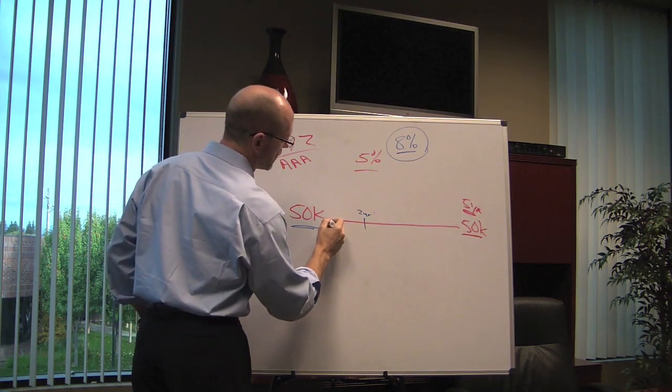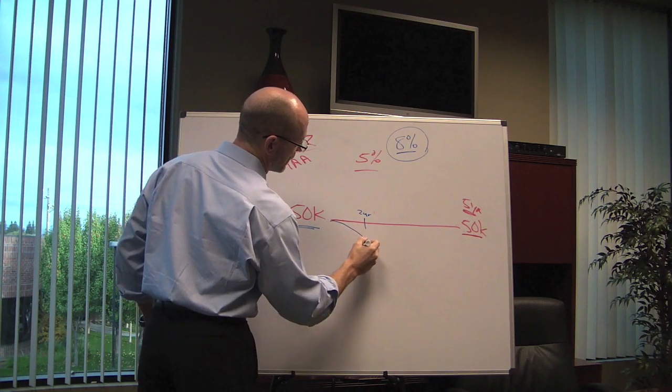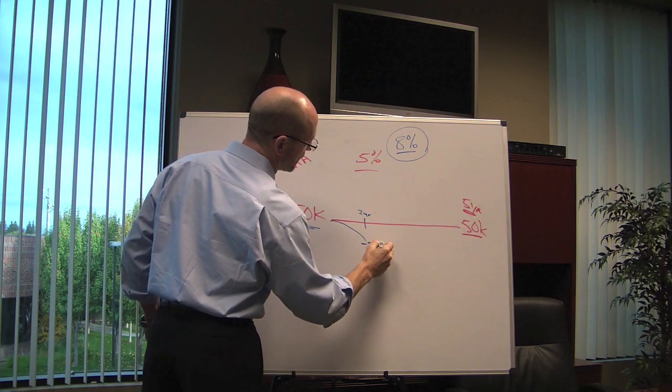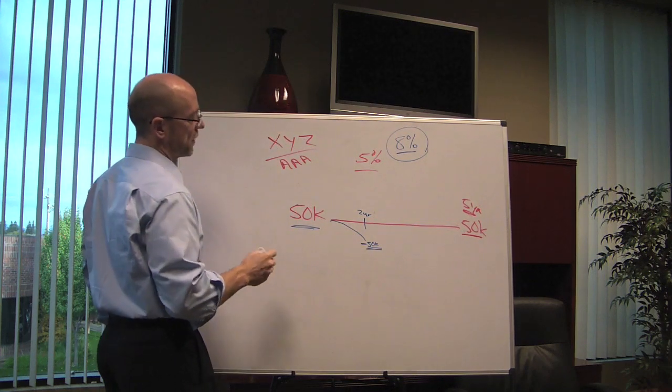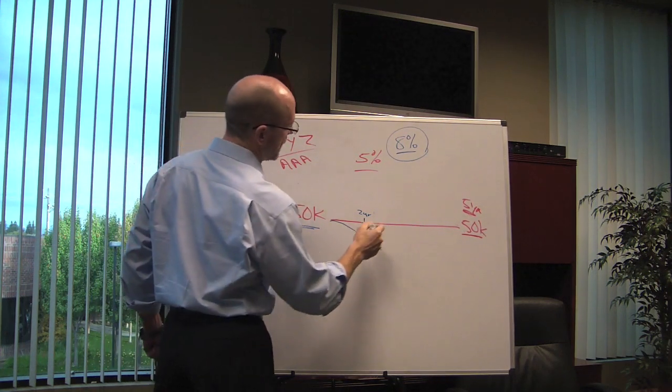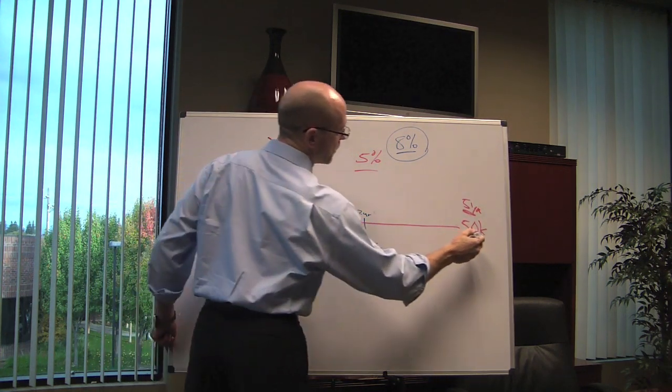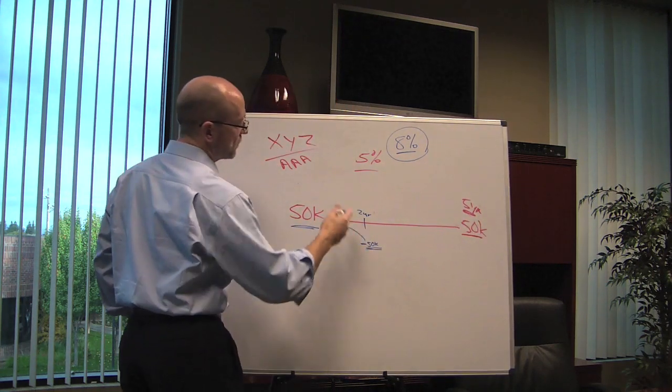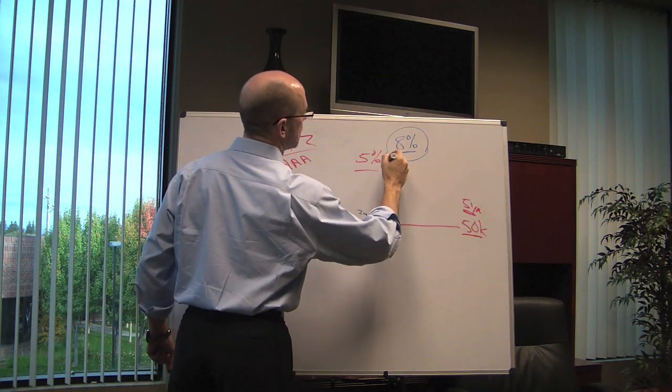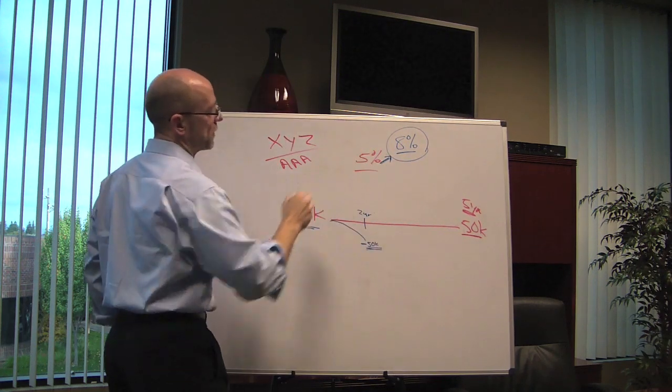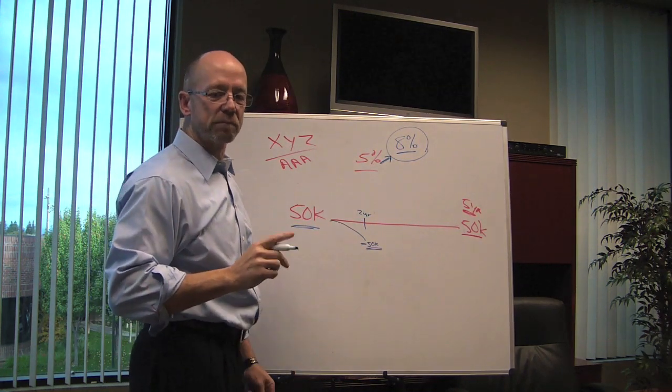So you have to essentially discount it. Basically, you got to go below $50,000 if you hope to get rid of that bond. The person buying the bond essentially would pay less. It would mature for the $50,000. So when you add everything together, they're going to do at least as well or better than they would at the 8%.